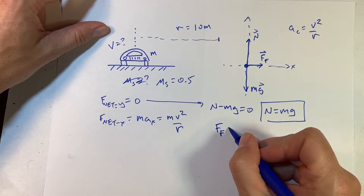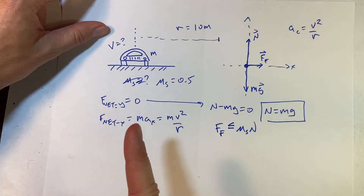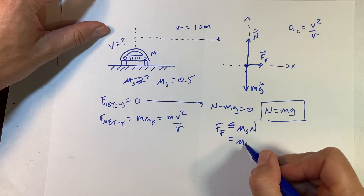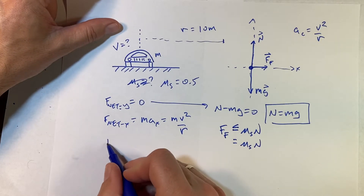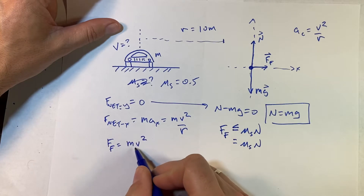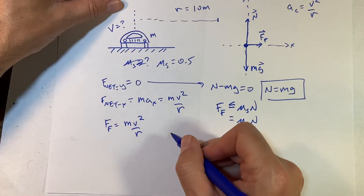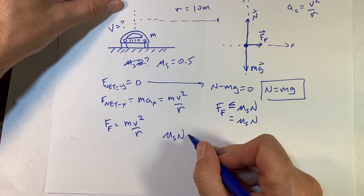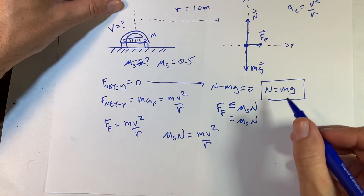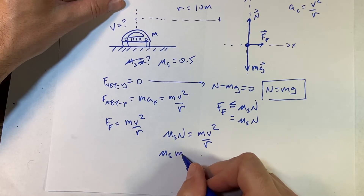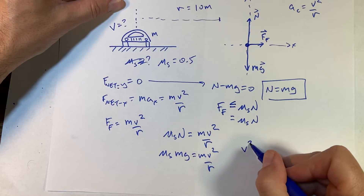Since I'm going as fast as I possibly can, I'll use the equality: friction force equals μ_s times the normal force. In the x-direction: friction force equals m·v²/r. Substituting: μ_s times N equals m·v²/r, and since N equals mg, I get μ_s·mg equals m·v²/r.